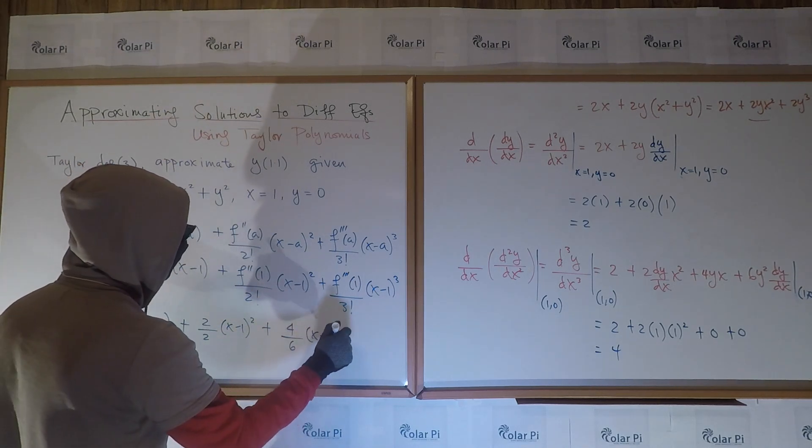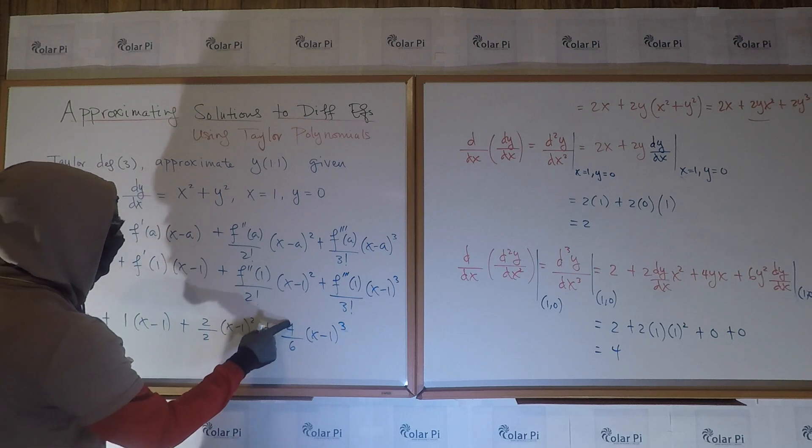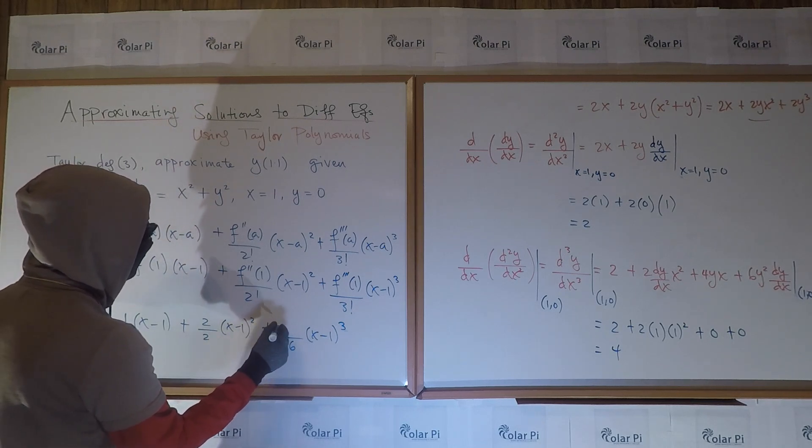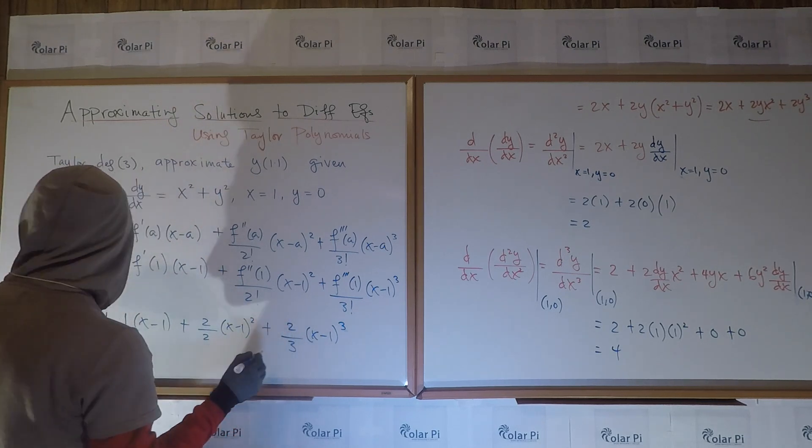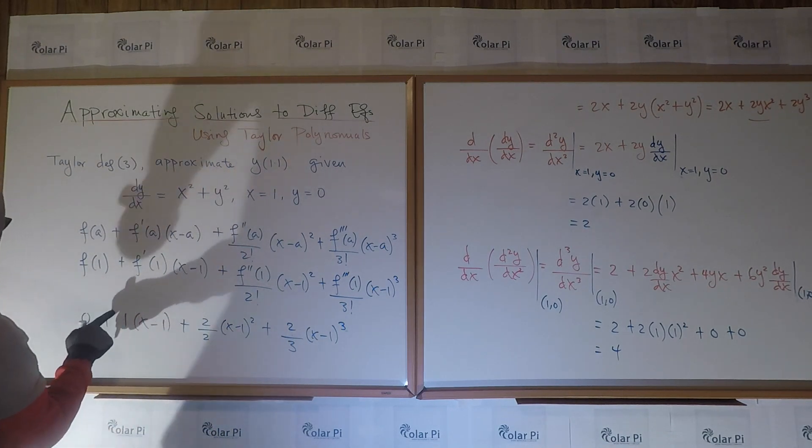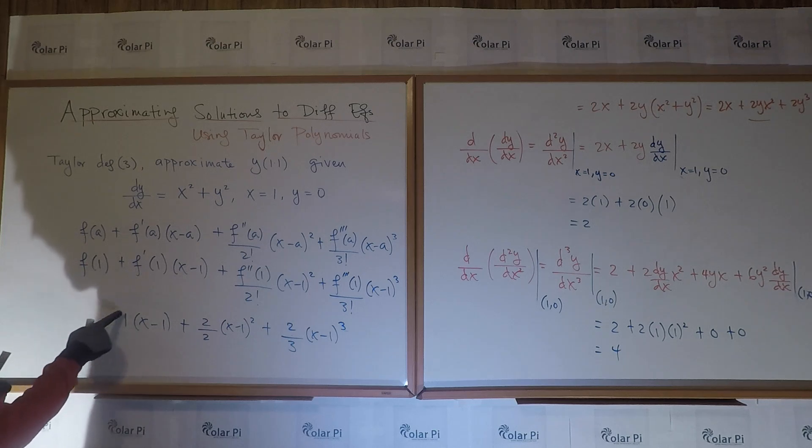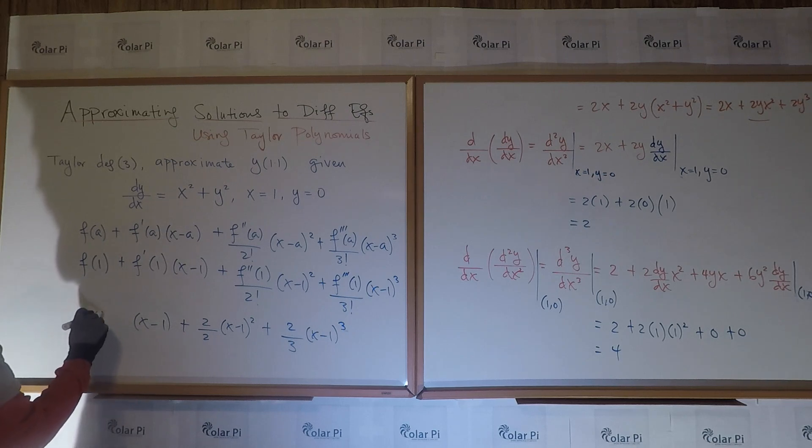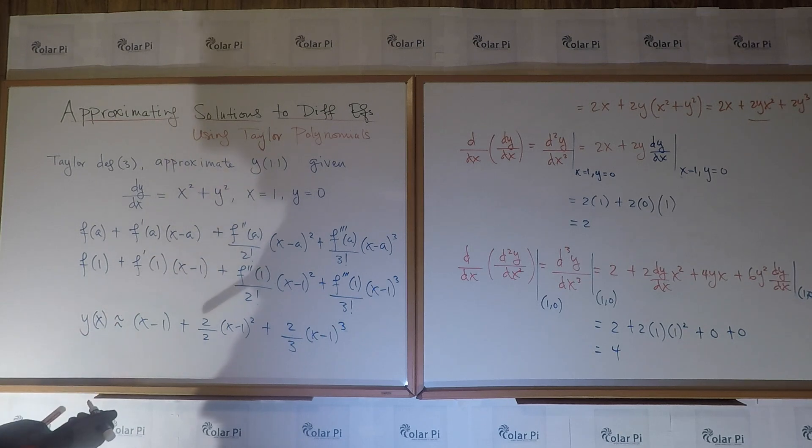And now to estimate y of 1.1, since this is what we're claiming to be approximately y, this is approximately y. This is y of x, approximately. All we have left to do is replace this x with 1.1. So, that is, plug in 1.1 here, means plug in 1.1 here, 1.1 there, 1.1 there, and then figure out what this number is going to be, roughly.